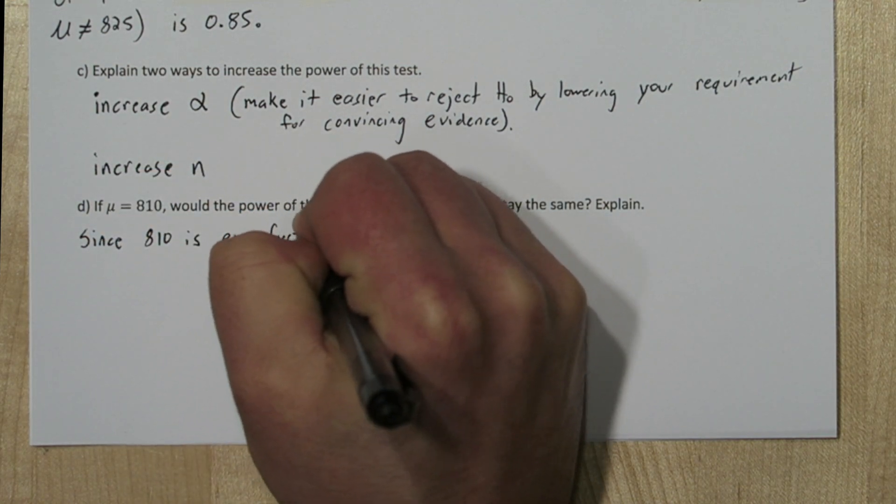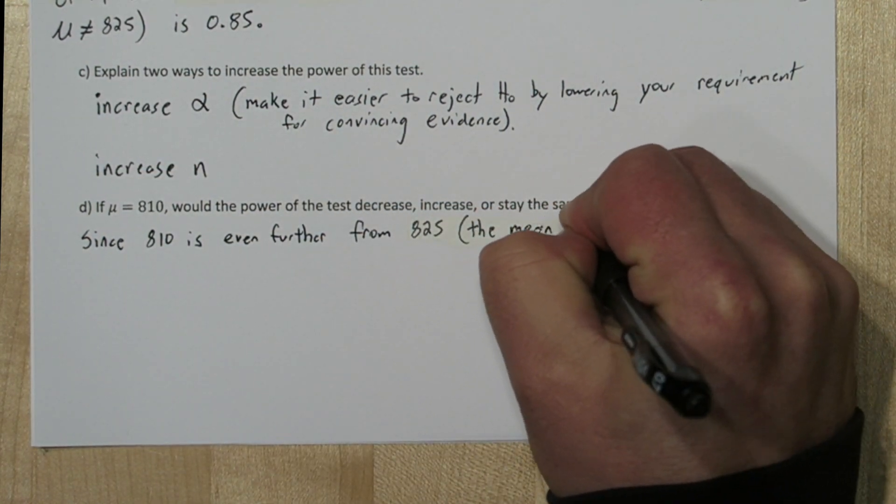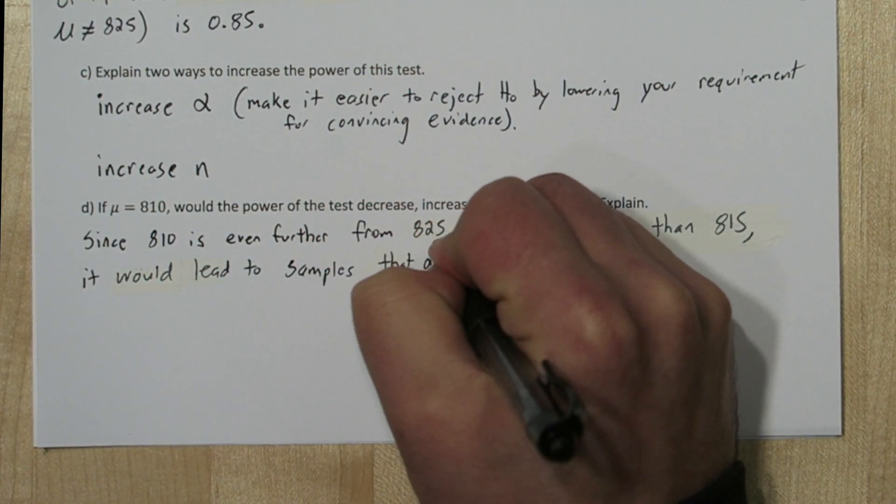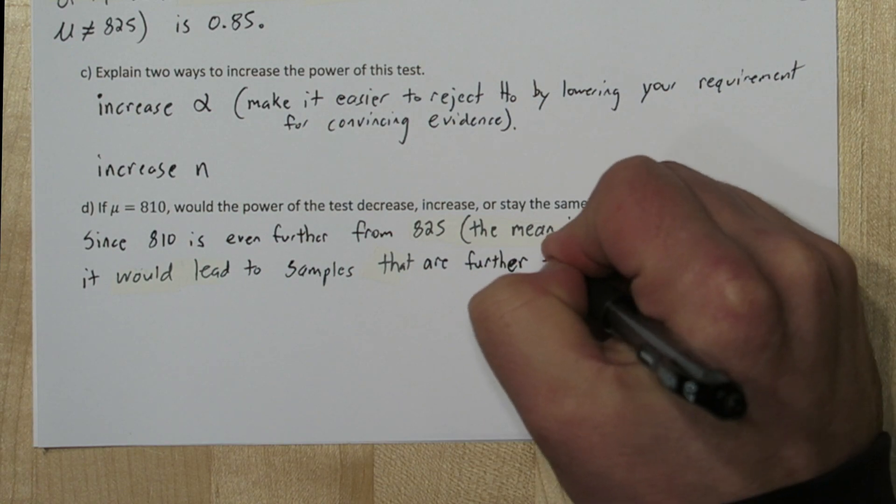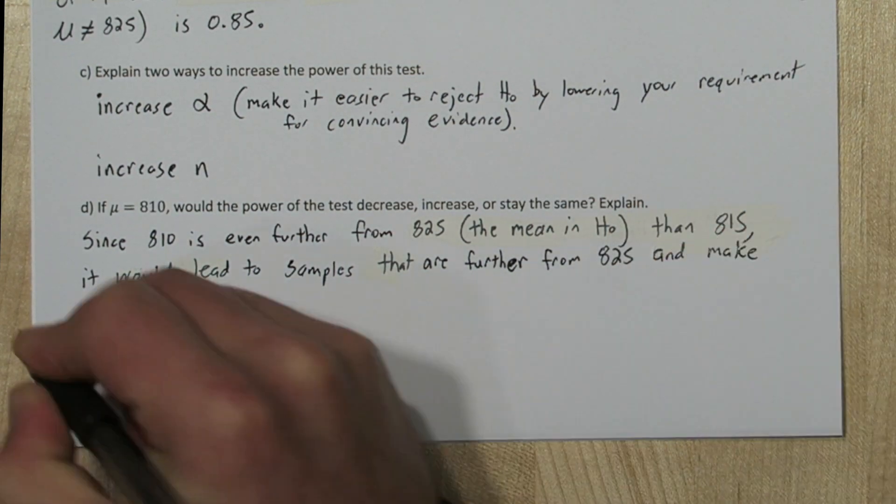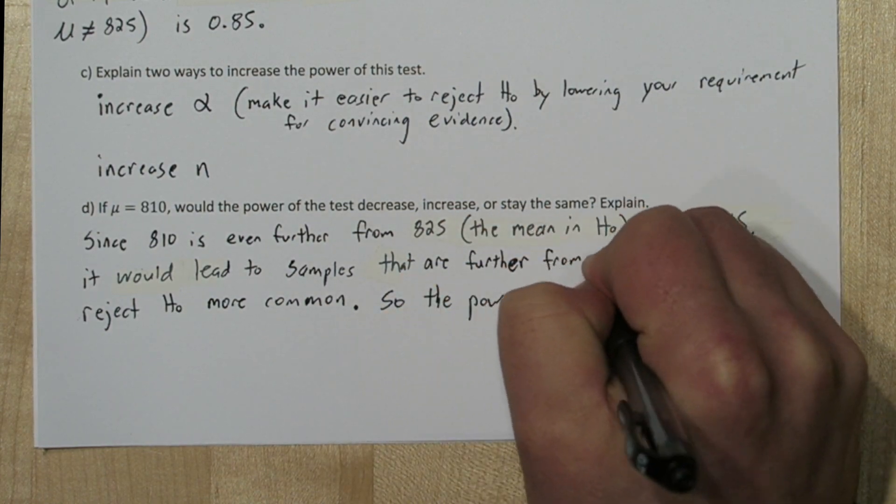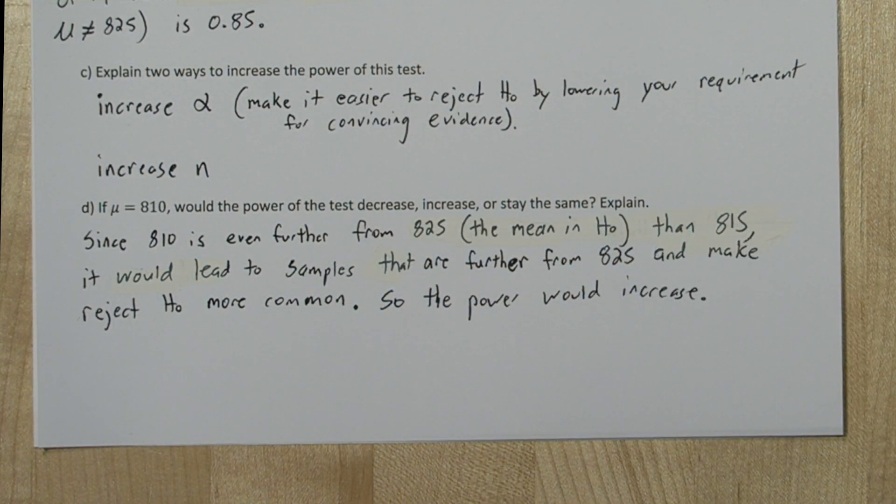When the true mean was 815, our power was 0.85. That means 85% of the samples would cause us to reject the null hypothesis. So since 810 is even further away from the 825 we see in the null hypothesis, we expect even more samples to cause rejections of the null hypothesis. So the power would increase.